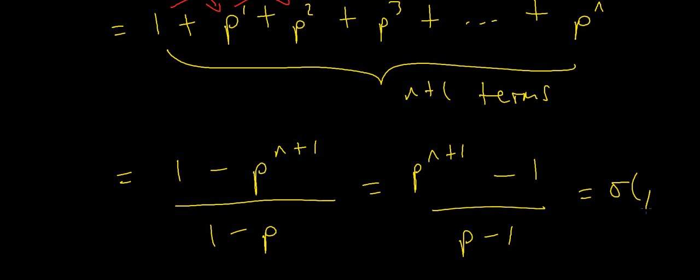That's the value of sigma of p to the power n, where p is any prime number and n is a natural number. The reason I use this example is we'll be able to derive a formula using this technique, which will allow us to quickly find the sum of the divisors of any number using a closed-form formula.